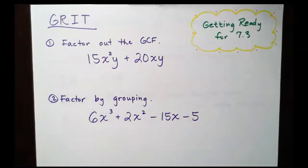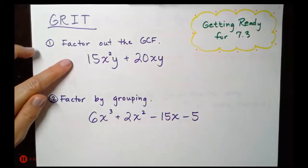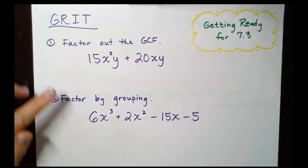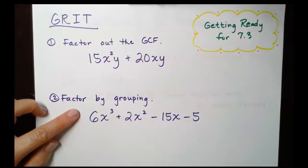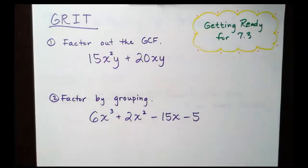So here's our grit for Section 7.3. We're going to start by factoring out the greatest common factor — remember, that's what we're going to look for first, every single time. And number two, we're going to factor by grouping. Why grouping? Because there are one, two, three, four terms. So pause the video here and work out the daily grit problems.